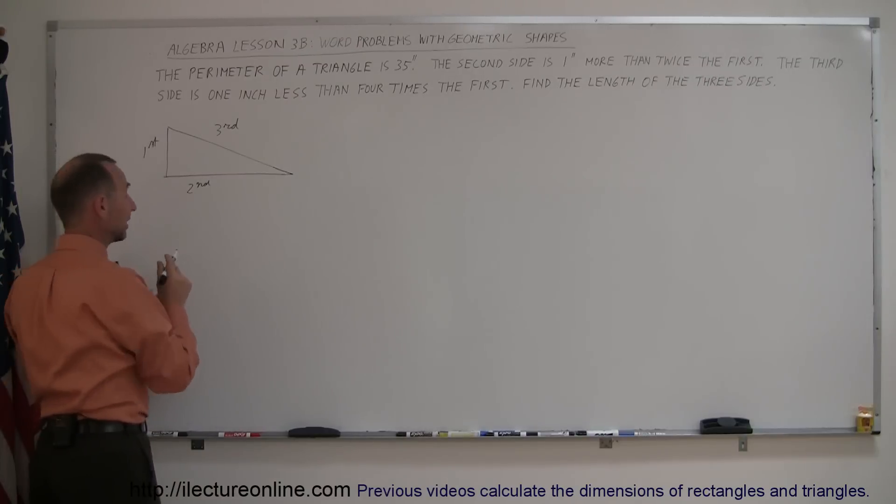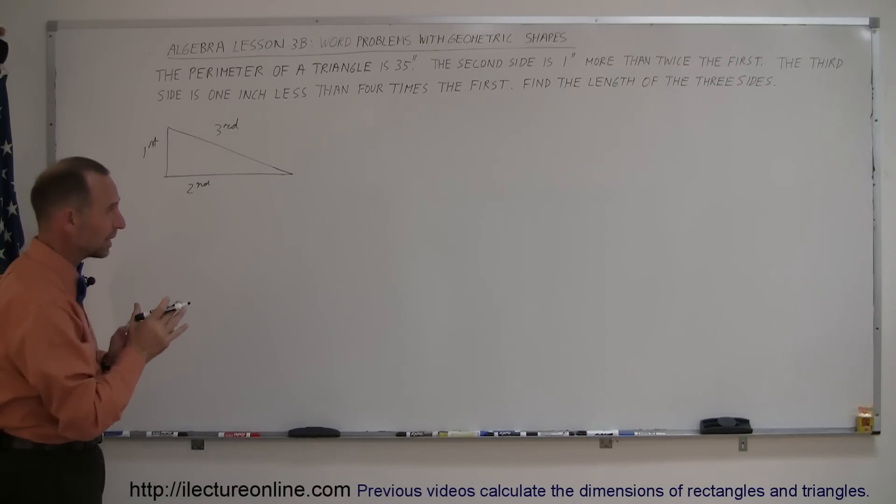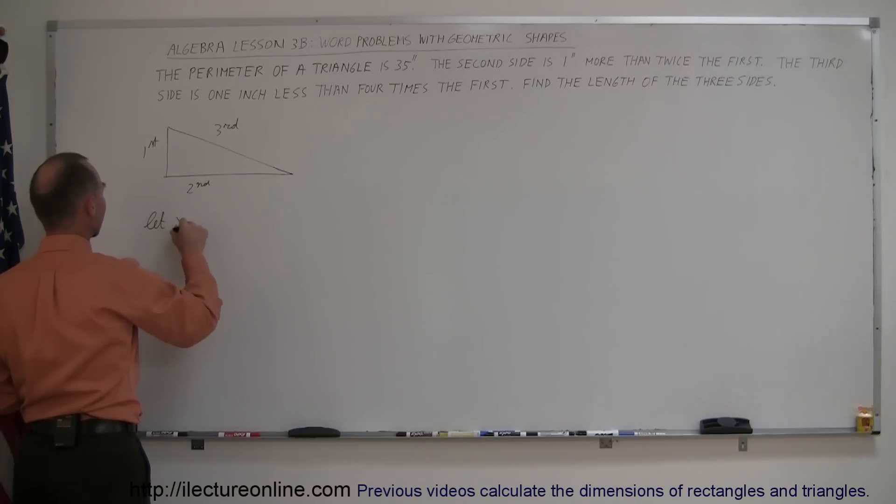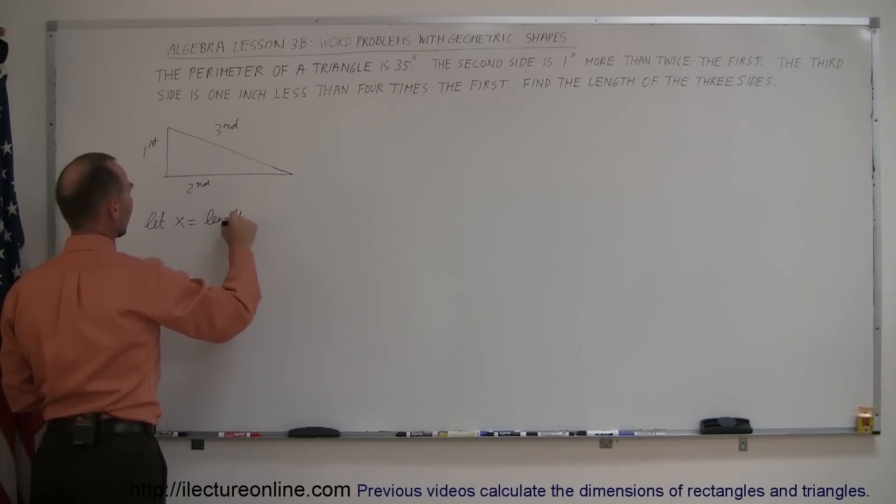So let's start off by assuming that the first is the smallest one, that seems to be the indication here. So let x equal the length of the first side.